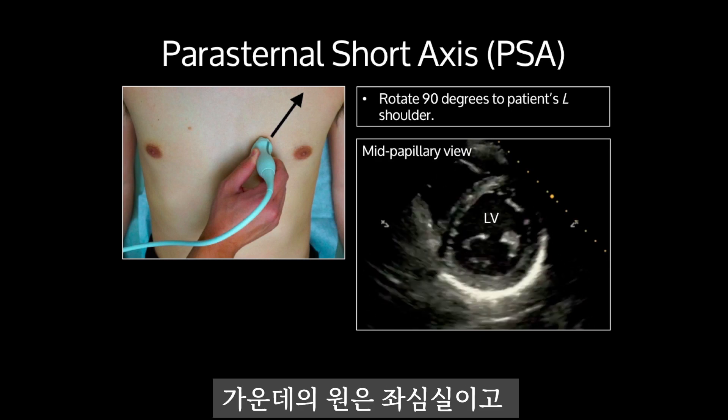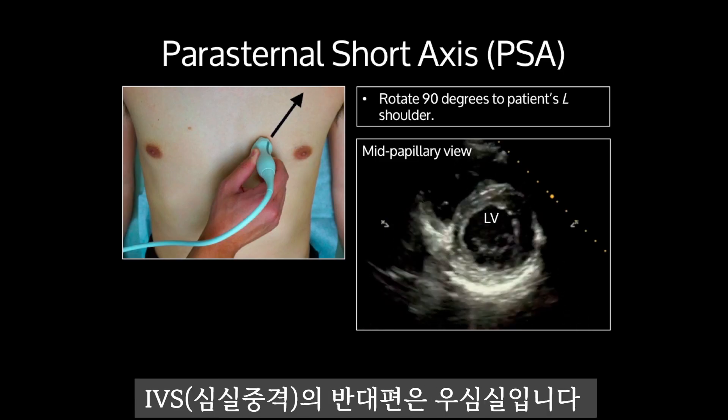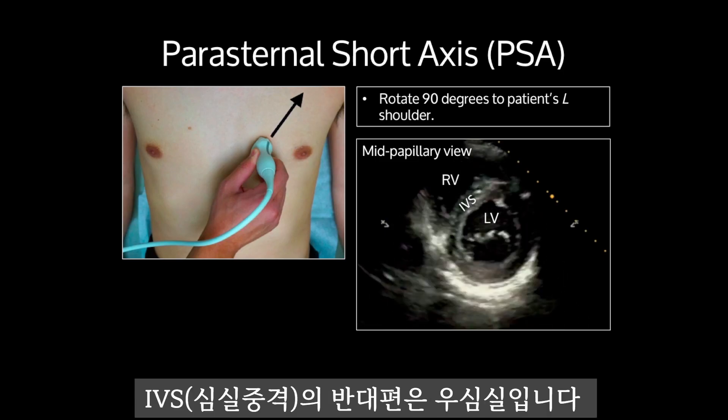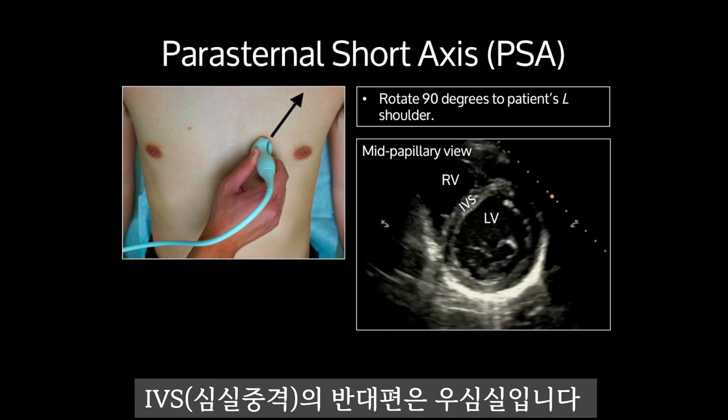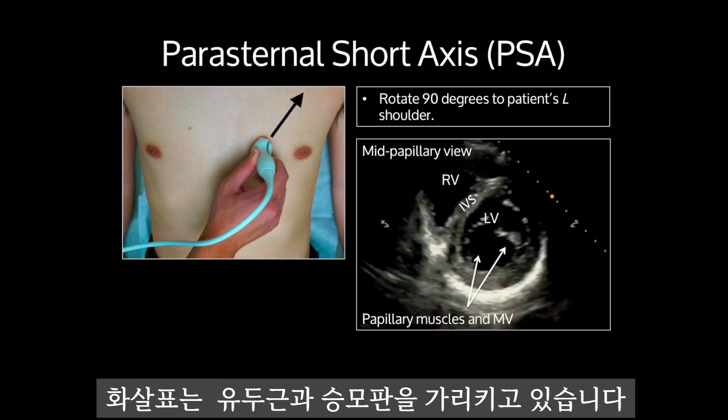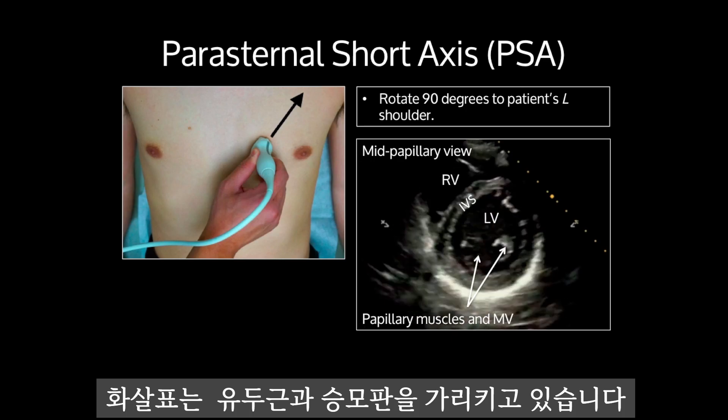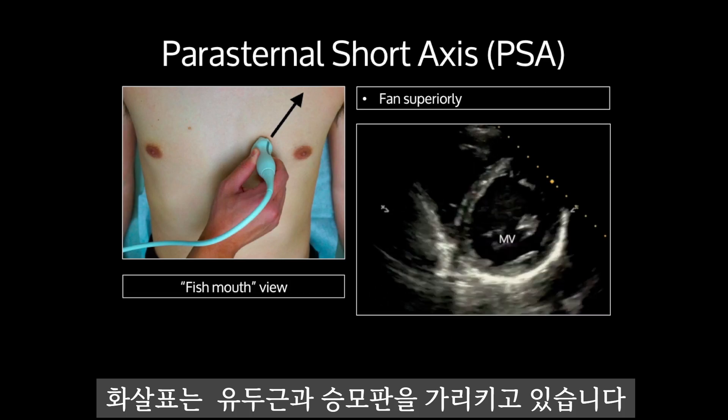The circle in the middle is the left ventricle. On the other side of the IVS is the right ventricle. The arrows are pointing to the papillary muscles and the mitral valve.